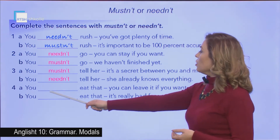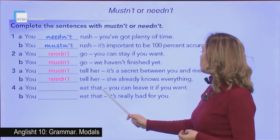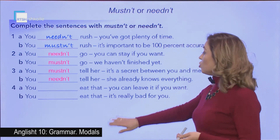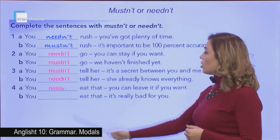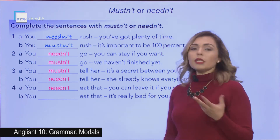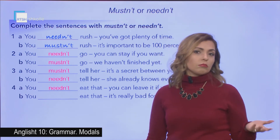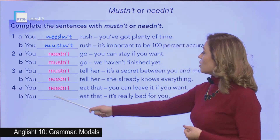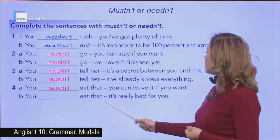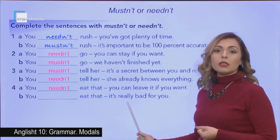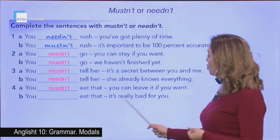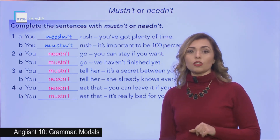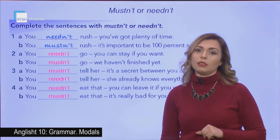Number four: 'You ___ eat that — you can leave it if you want.' Again, you can choose, so you needn't eat that — it's not necessary. Whereas, 'You ___ eat that — it's really bad.' Since it is really bad for you, there is an obligation, so you mustn't eat it.